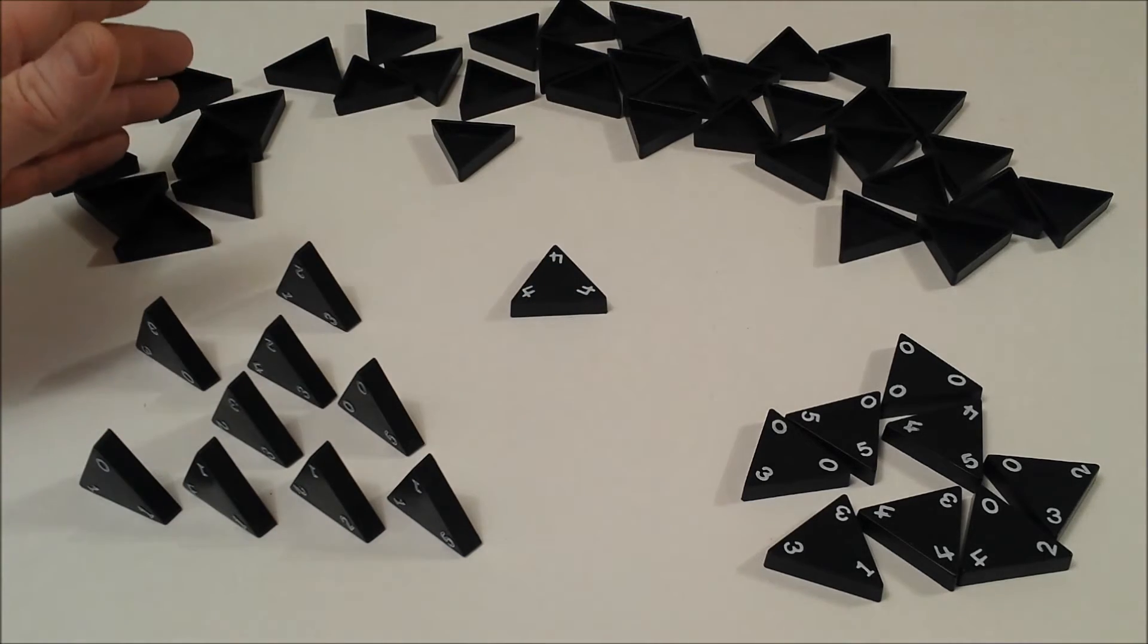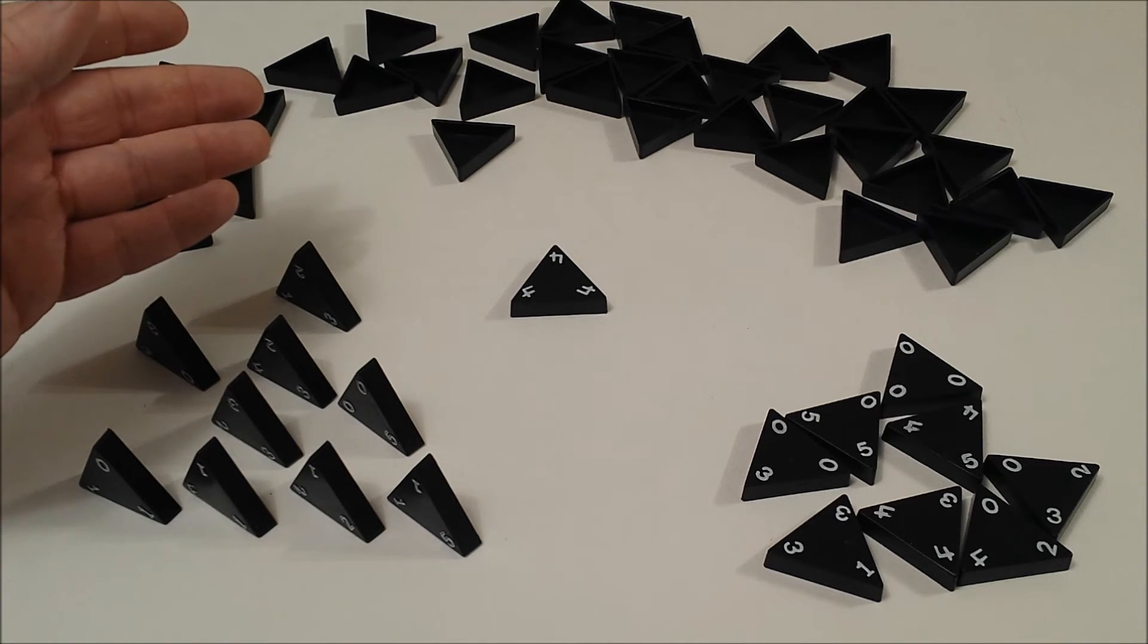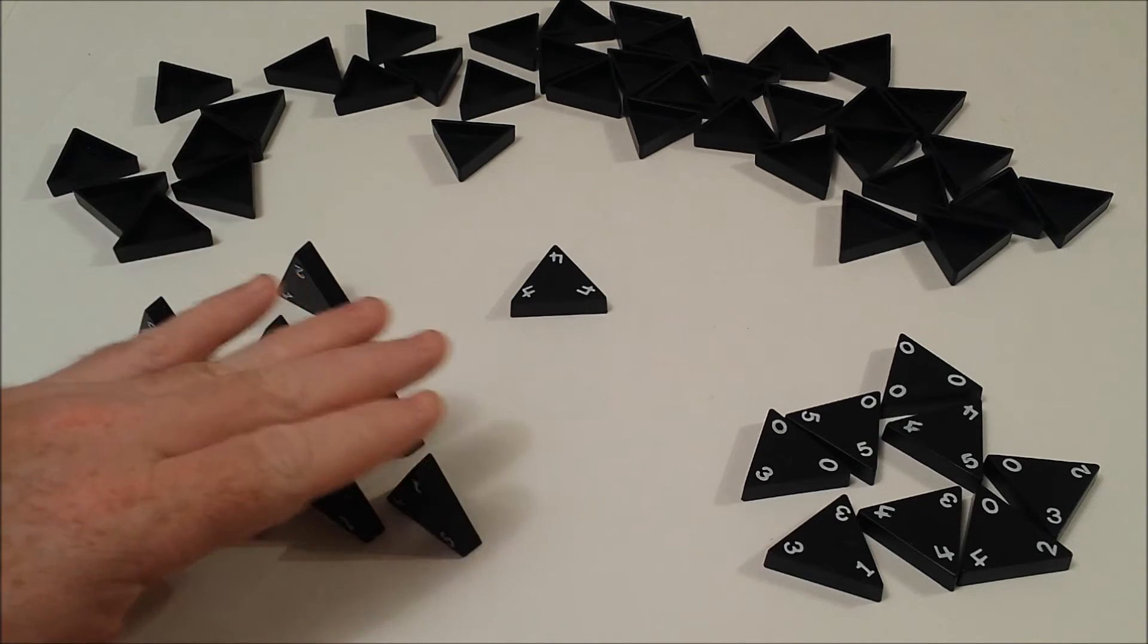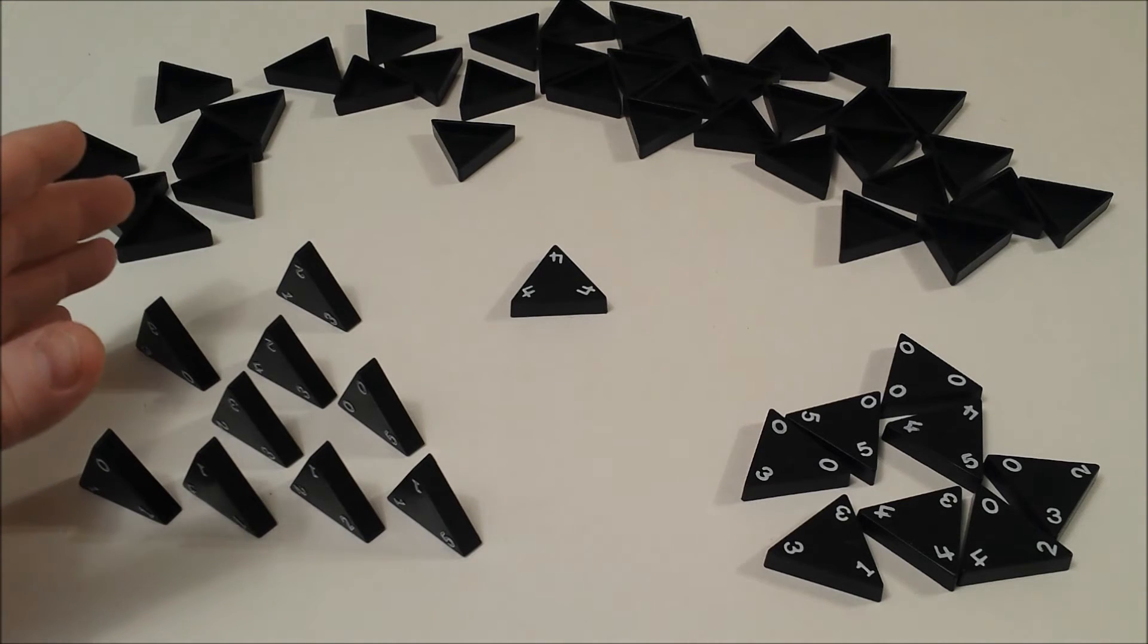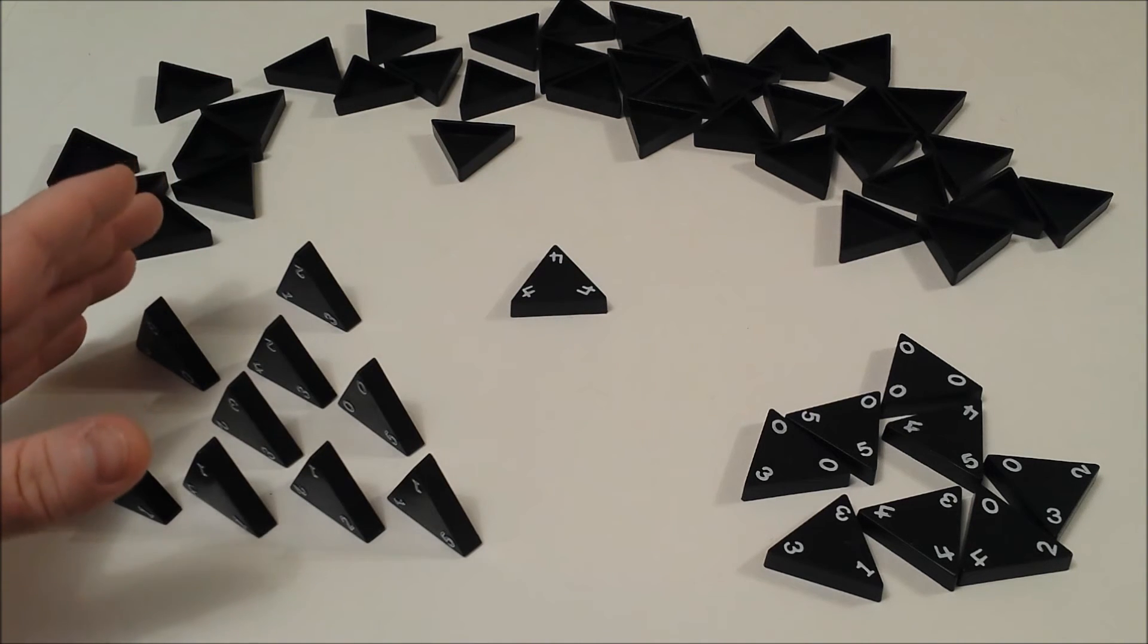If there are no tiles left to draw and you have to pass, it's minus ten points. There are two ways a round can end: either someone has played all their tiles, or every player has passed. Bonuses may be achieved depending on how the game ends.